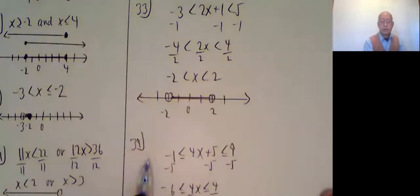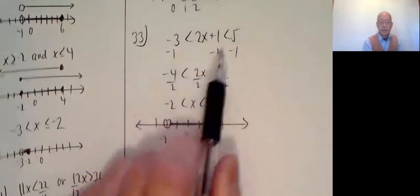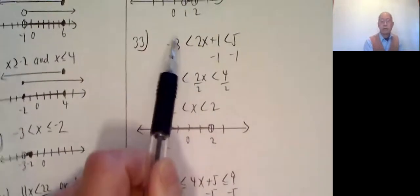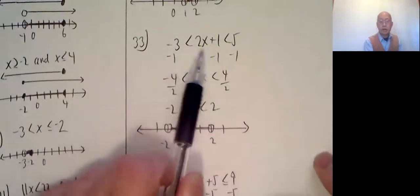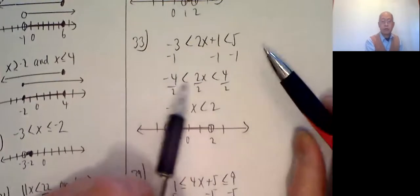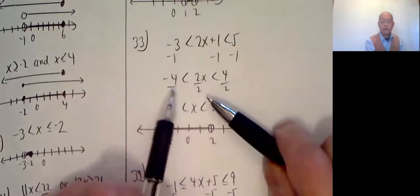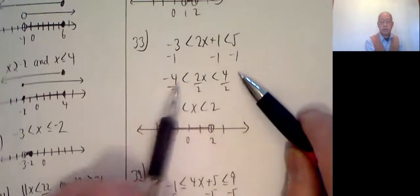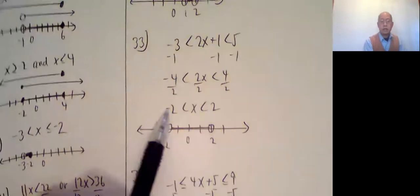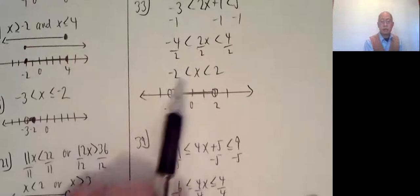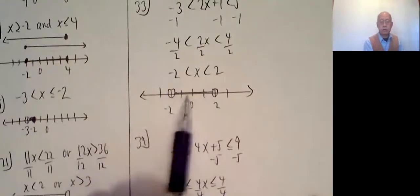33 and 39. These are both ands, but it's easy to just work them out. So whatever you do to 1, you do to all three of them. Okay, so isolate the x. Get rid of 1: minus 1, minus 1, minus 1. Negative 4 less than 2x less than 4. Divide by 2. 2 is a positive number, so no need to change the inequality symbol. So negative 2 is less than x which is less than 2. Basically, x is between negative 2 and 2. Open circle, open circle, shaded.